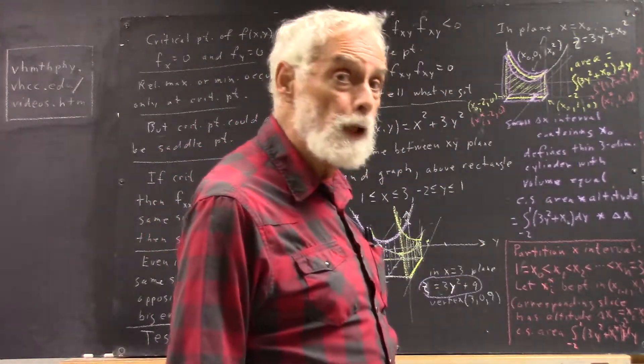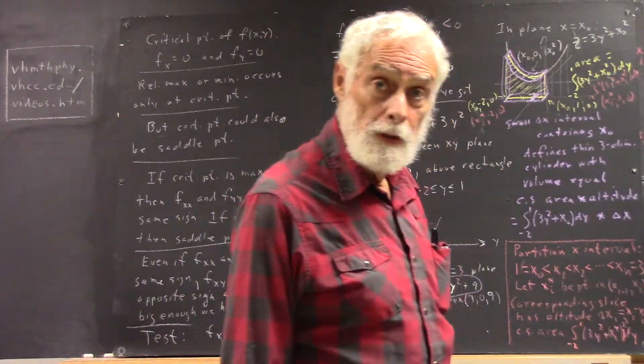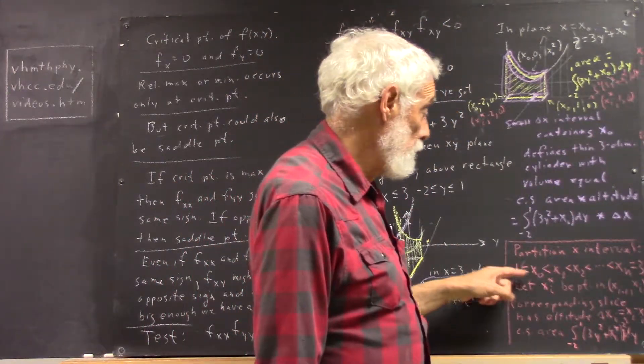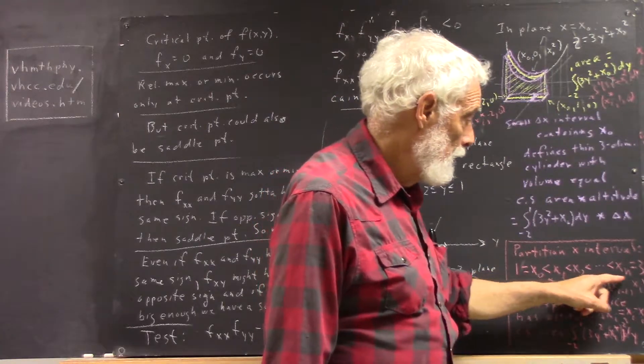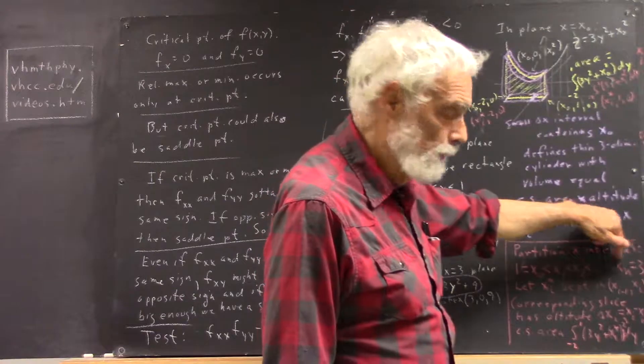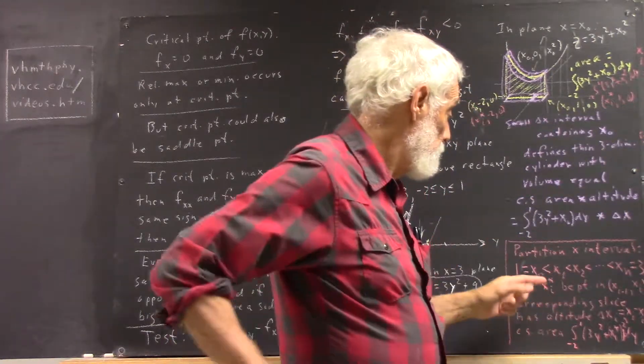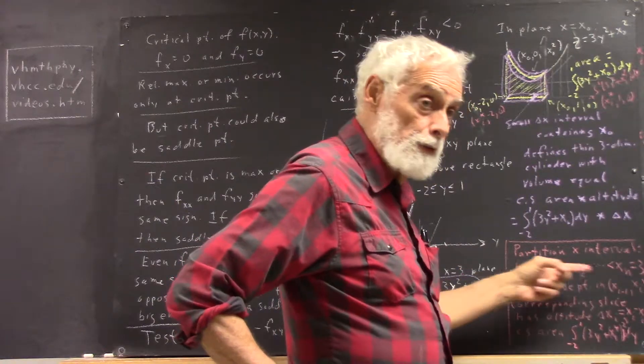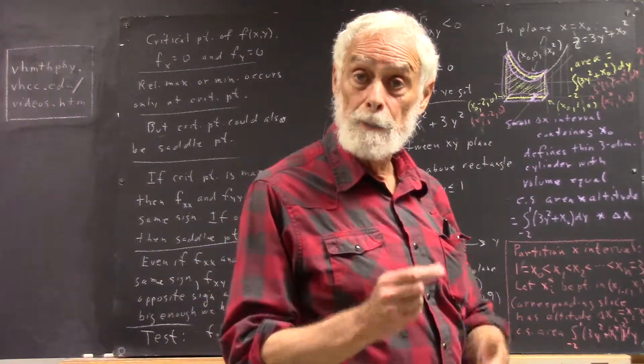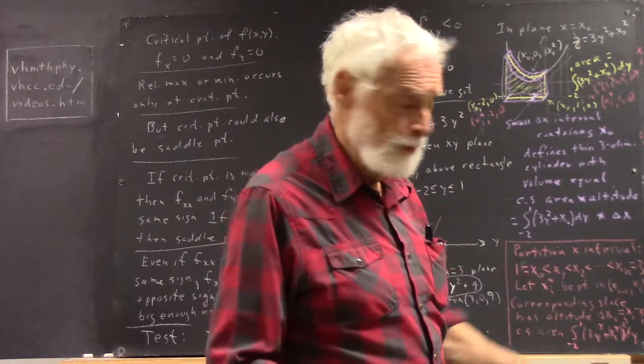So we partition our x-interval. Our x-interval goes from 1 to 3. A partition has an x-naught equal to 1 and an x_n equal to 3, and x-naught is less than x_1, less than x_2, etc. Now maybe we can declare, and we can if we wish, we can declare that all these intervals have equal length, so we have the same delta x for every one.